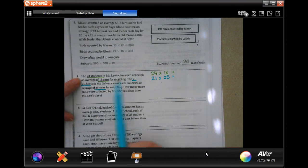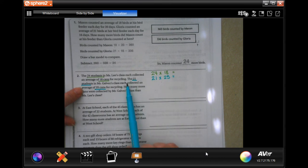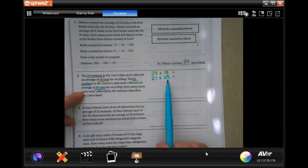This one says the 24 students in Miss Lee's class each collected an average of 18 cans. It's 24 students, 18 cans. The 21 students in Mr. Giles' class collected an average of 25 cans. So 21 students, 25 cans. How many more cans were collected?